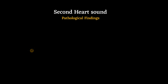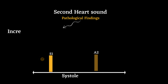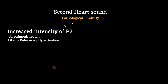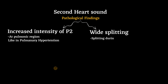Some pathological findings in the second heart sound include: first, increased intensity of P2, where P2 is louder than A2 at the pulmonic region in the second intercostal space, as seen in pulmonary hypertension, which is the most common cause. Second, wide splitting, detected by the presence of splitting during expiration, seen in anything that causes delayed conduction down the right bundle, such as right bundle branch block.